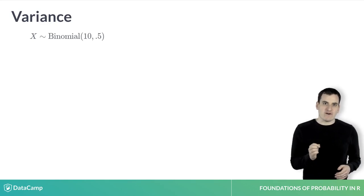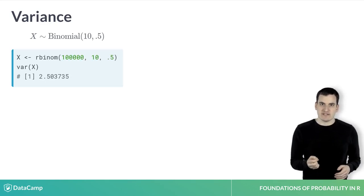R provides the var function to calculate the variance from a particular sample. So we could simulate 100,000 draws of a binomial distribution with size 10 and probability 0.5, then use var to find the variance of that distribution. We'd see that the variance is very close to 2.5.